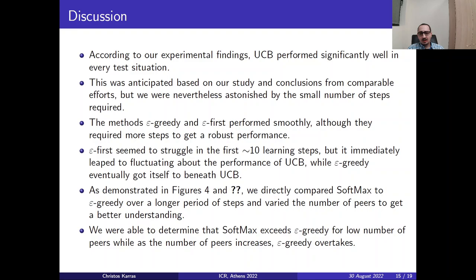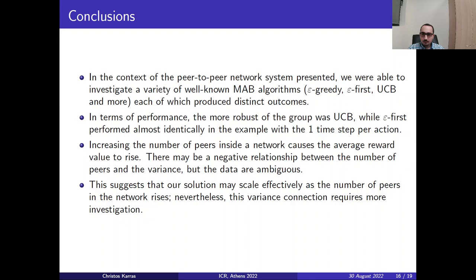While the epsilon greedy eventually positioned itself beneath the UCB, as demonstrated in figures 4 and 5. This is figure 5. We directly compared the softmax to the epsilon greedy over a longer period of steps. We were able to determine that the softmax exceeds epsilon greedy for a low number of peers, while as the number of peers increases ε-greedy overtakes.